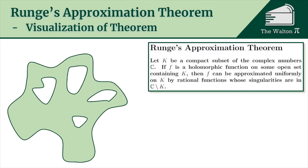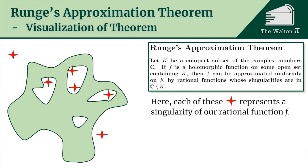To visualize what this means: if this weird green blob is our compact subset K, then we can approximate any holomorphic function on K using rational functions where the singularities are at these red crosses — all of which are in the complement of K. Each cross represents some singularity, and we can approximate f uniformly with those rational functions.